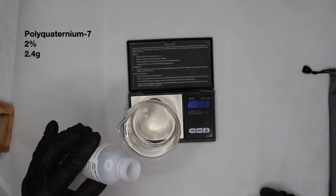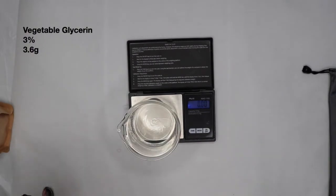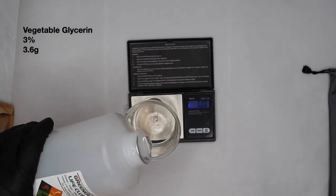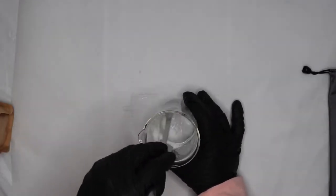2.4 grams of polyquaternium 7, 3.6 grams of vegetable glycerin. We want to stir everything together before we pour it into our surfactant phase.